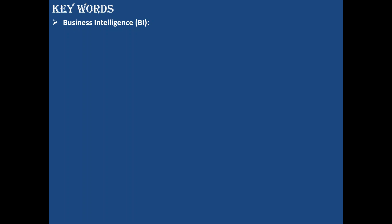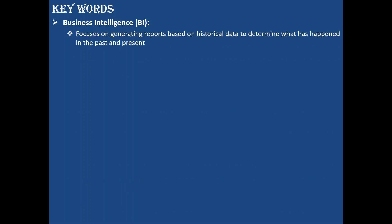The first keyword is Business Intelligence. We can use Fabric to do business intelligence reporting. Business Intelligence focuses on generating reports based on historical data to determine what has happened in the past and present. For example, if you are placing orders on a platform like Flipkart or Amazon, or if it is a financial domain, different banks collect financial data. In the travel domain we have apps like MakeMyTrip — different applications collect and store data in the back end.